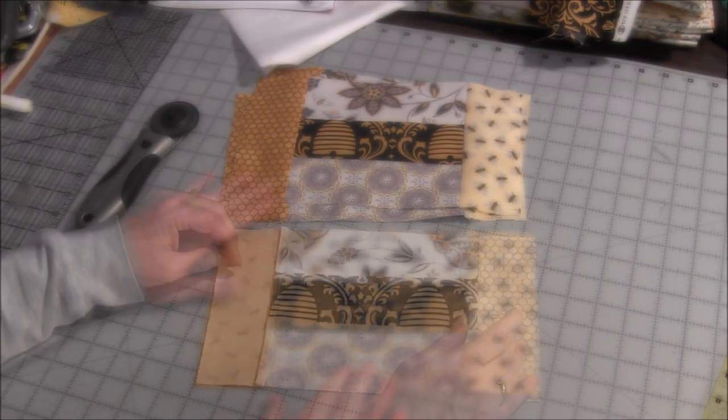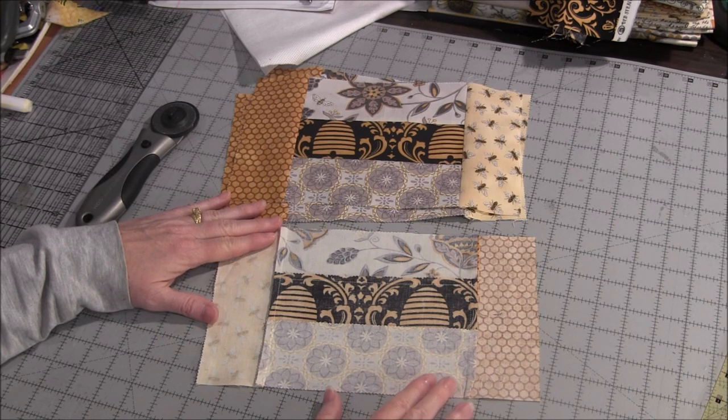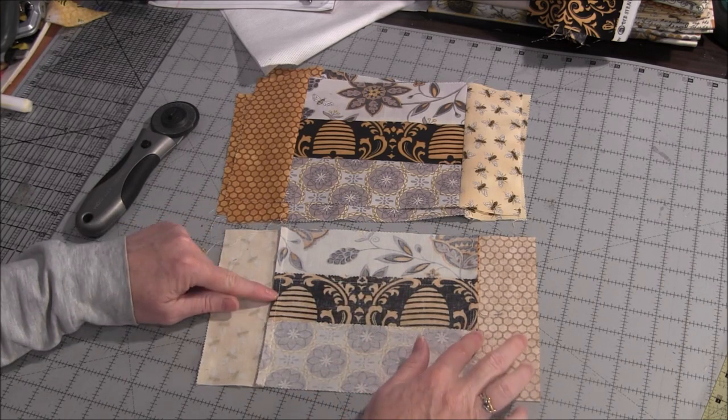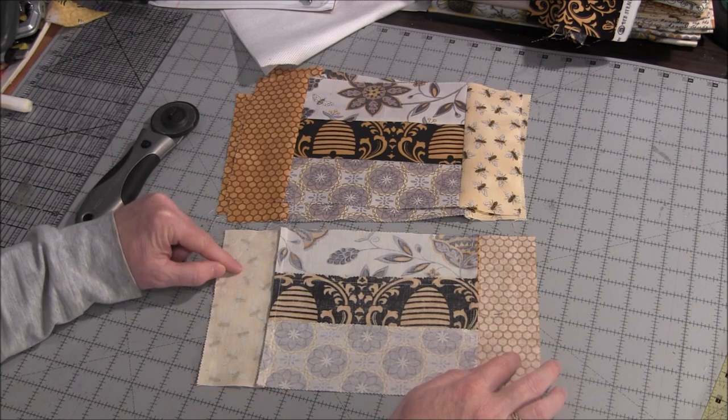Here are my finished mug rug tops. And on the back, you can see I pressed the seams one direction, and then the side seams I pressed towards the side strips.